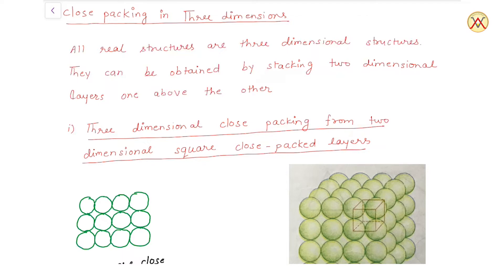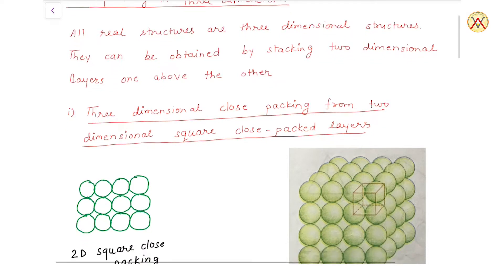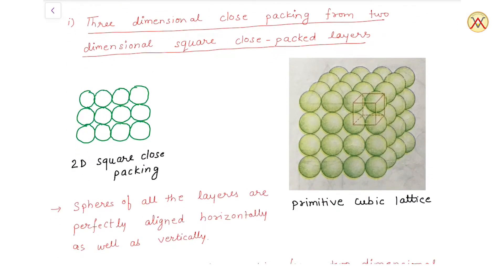All structures available in nature, all solids available, are three dimensional. So all the real structures are three dimensional. These are formed by stacking two dimensional layers one on top of another in different arrangements, which gives us different types of three dimensional packing. We will discuss some of these packings here.